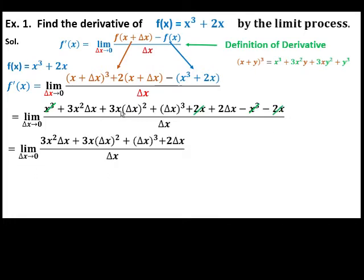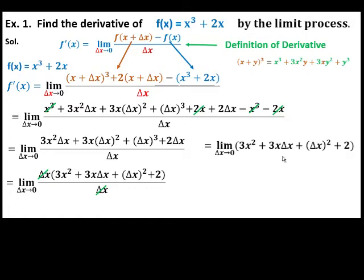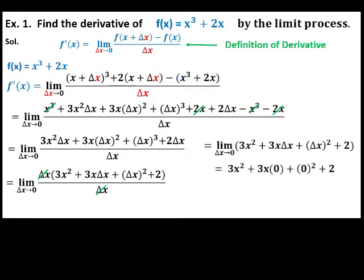Notice that in each term, the common factor is delta x. So factor out delta x and cancel out the common factor. This is now the simplified form of the function. We can now evaluate the limit of this function as delta x approaches 0, or replace delta x with 0. Then simplify.